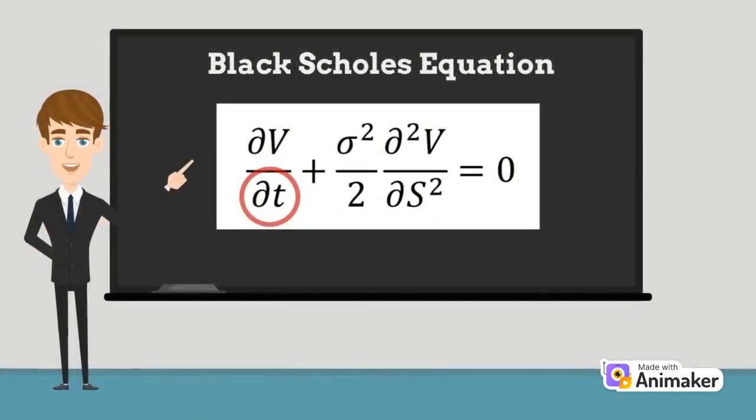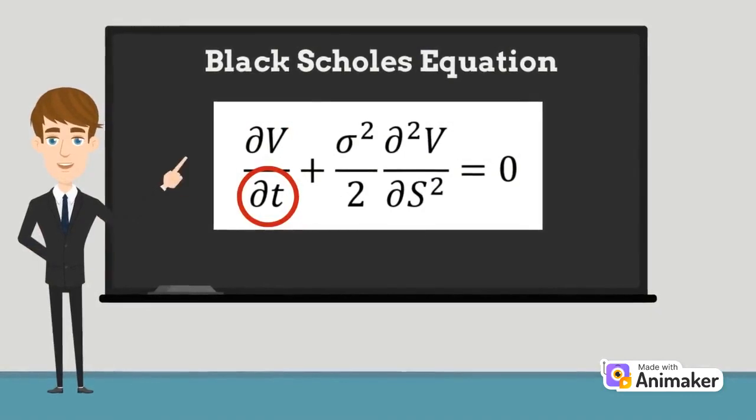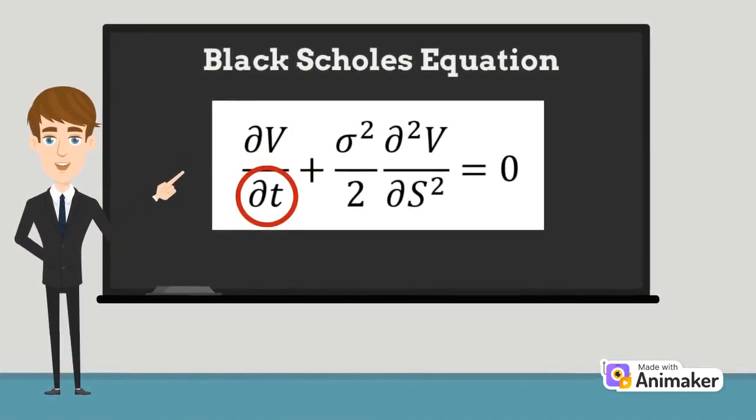t represents the time until the option's expiration. Remember how we said that an option is a contract subjected to a time constraint.